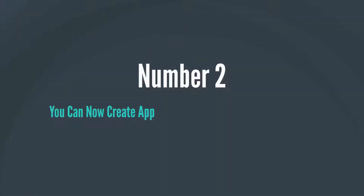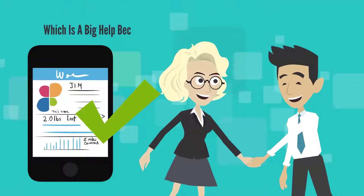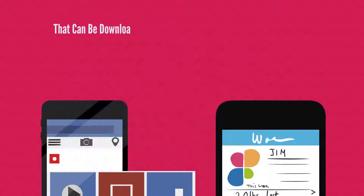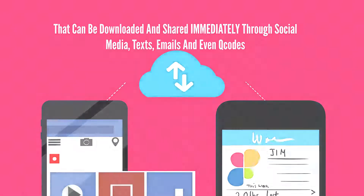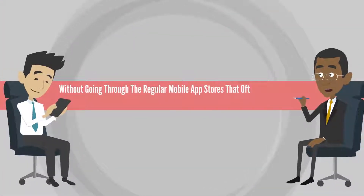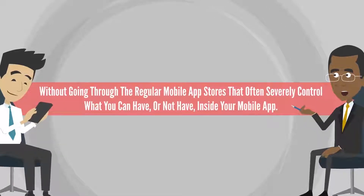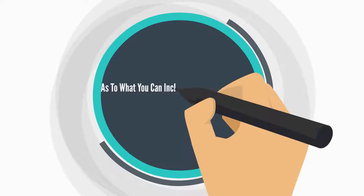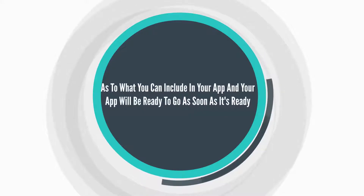Number two: you can now create apps that are independent from app stores, which is a big help because it allows you to quickly create great mobile apps that can be downloaded and shared immediately through social media, texts, emails, and even QR codes without going through the regular mobile app stores that often severely control what you can have or not have inside your mobile app. You will be essentially controlling your own destiny as to what you can include in your app, and your app will be ready to go as soon as it's ready.